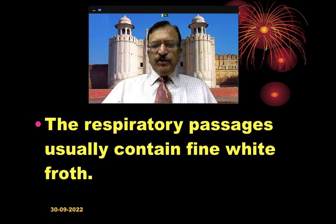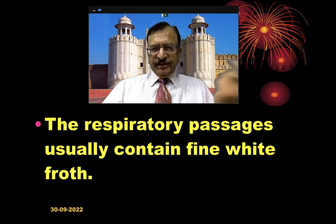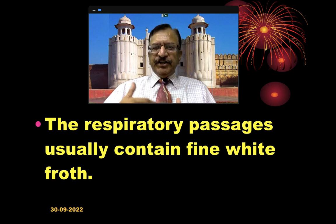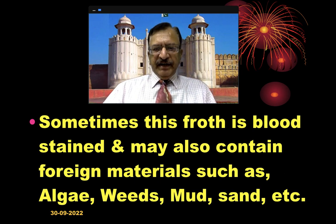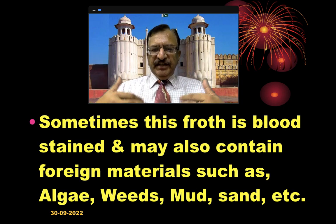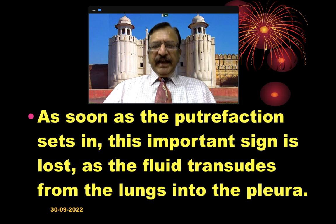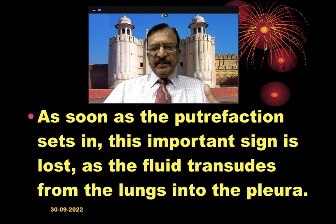The respiratory passages usually contain fine froth. This fine froth is made by the violent respiratory efforts, where mucus and water get churned up, and this fine froth is seen in the respiratory tract. Sometimes this froth is blood-stained and may also contain foreign materials which have been inhaled — algae, weeds, mud, and sand particles. As soon as putrefaction sets in, this important sign is lost, as the fluid then will transudate from the lungs into the pleura.